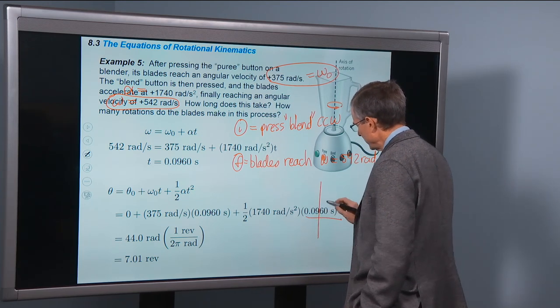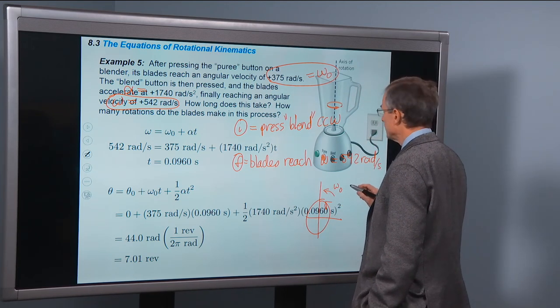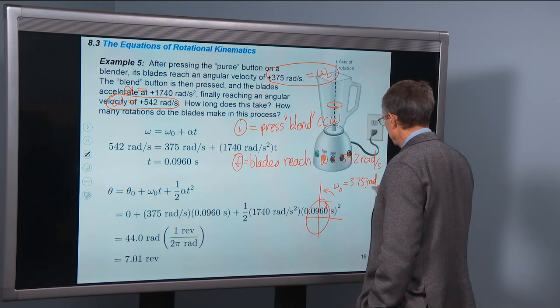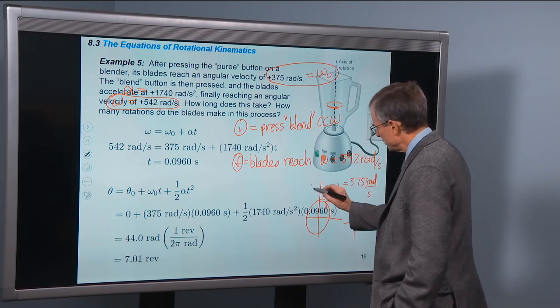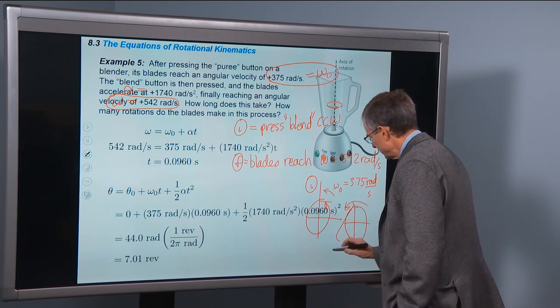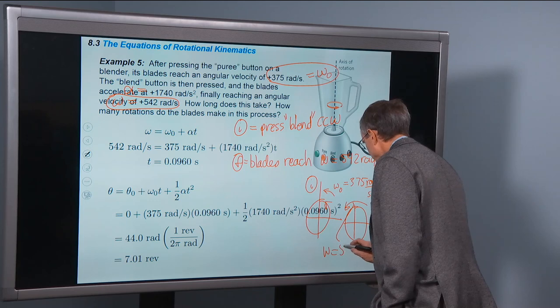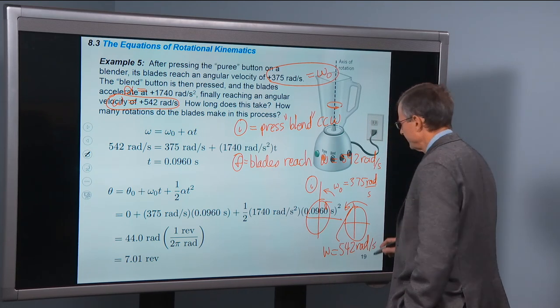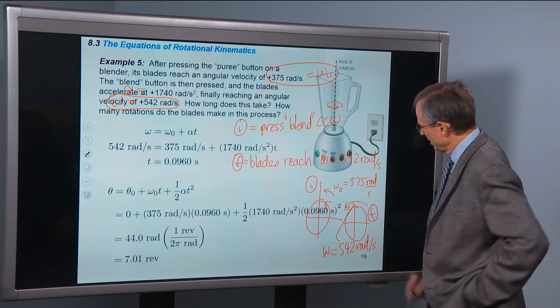So we've got a diagram. Actually, we can do a little bit better on the diagram. We'll see that ω0 is 375 radians per second. This is the initial situation. The final situation is that ω is 542, and that's the final case. It's rotating faster, so I'm going to put a bigger arc on that.